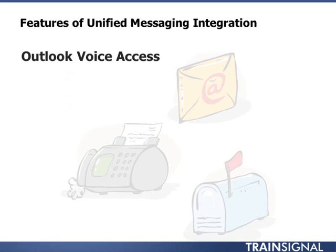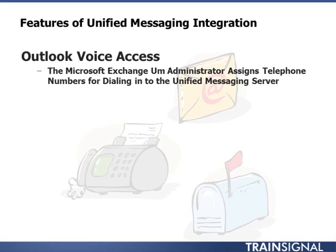Outlook Voice Access used to be called Subscriber Access. To use this feature, the Microsoft Exchange UM Administrator would assign telephone numbers for dialing into the Unified Messaging Server. When a user dials in using Outlook Voice Access, it allows them to gain access to their inbox, email, calendar, contact information, and the global address list — essentially allowing the user coming in through the phone system to use many of the features of Microsoft Exchange.